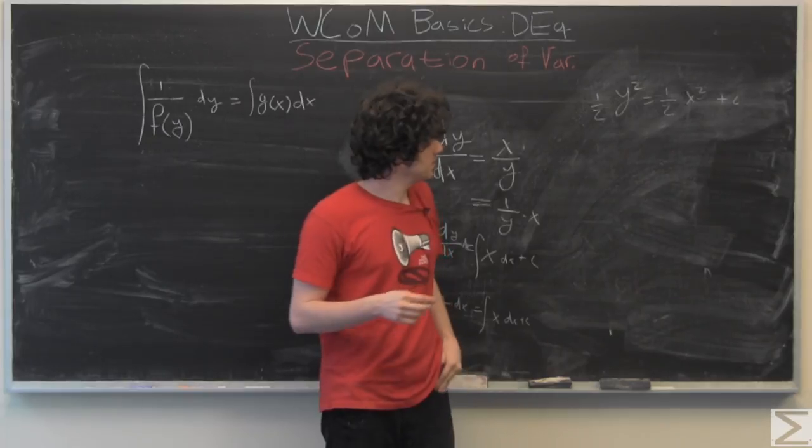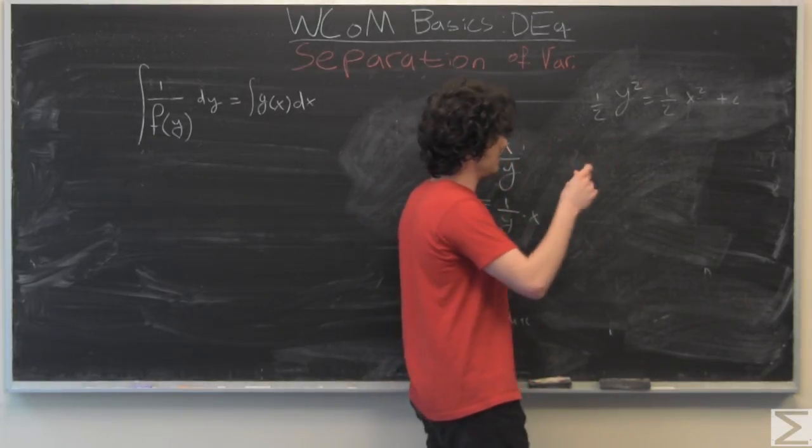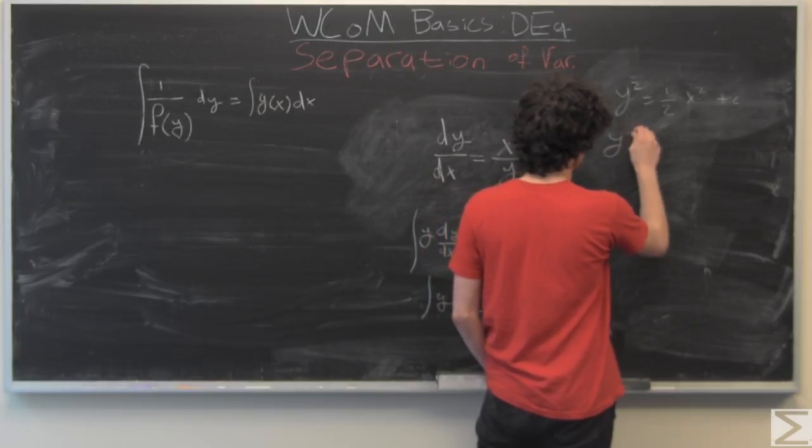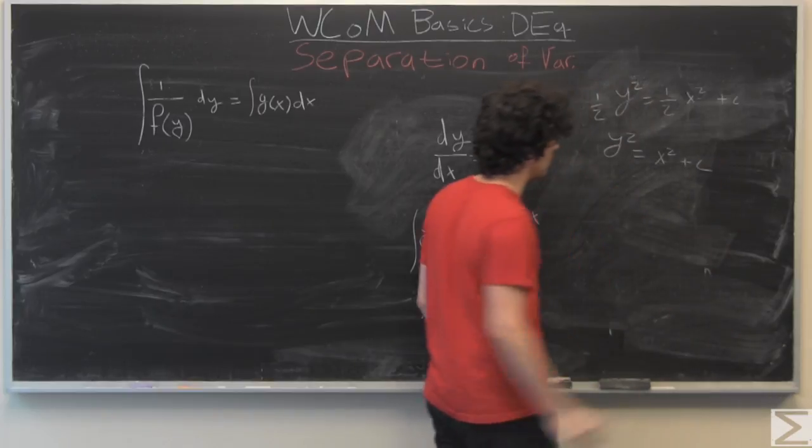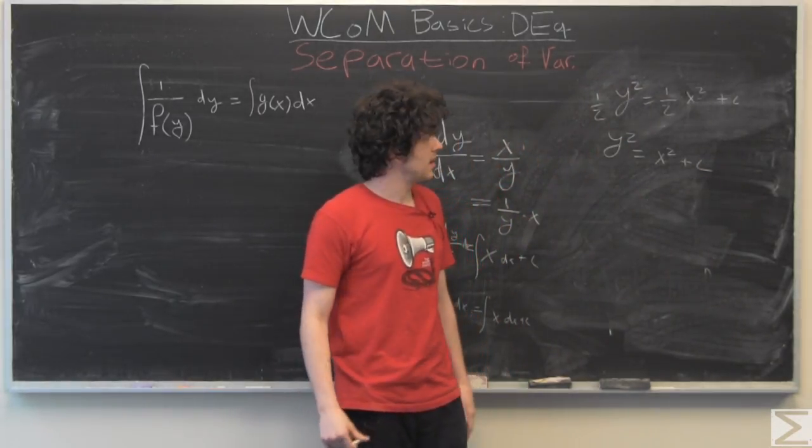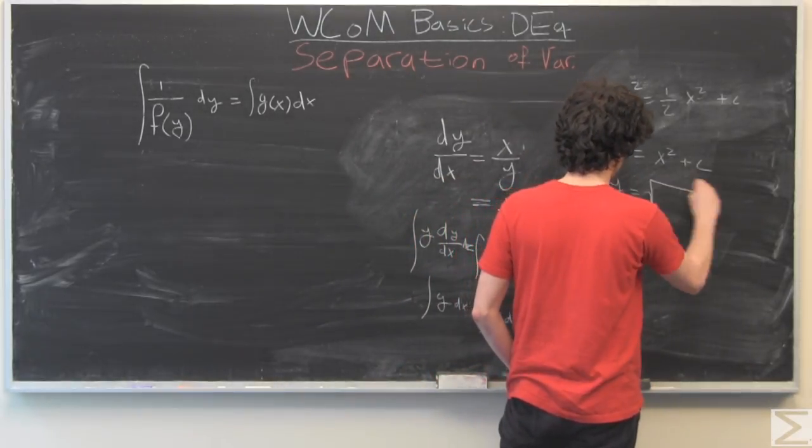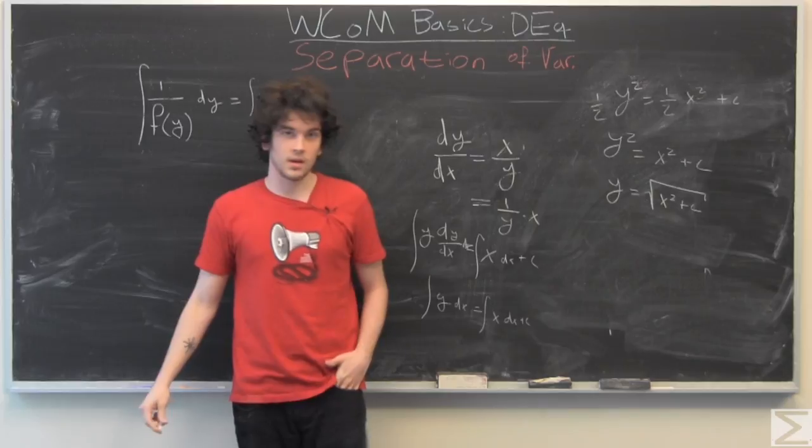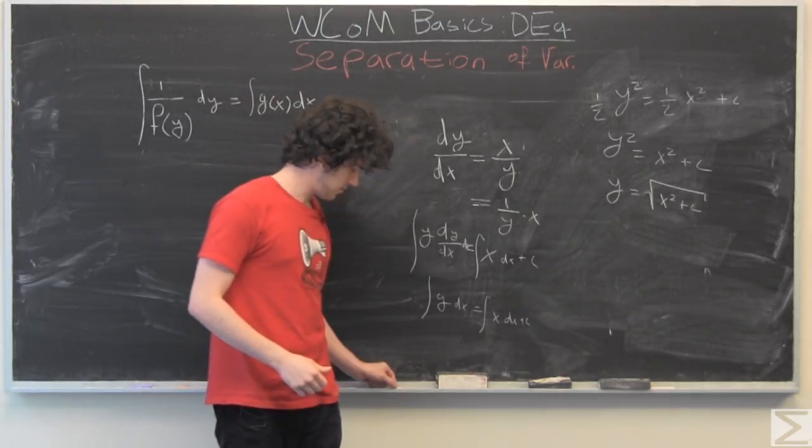So, yeah, the halves are going to multiply everything by 2. The c is also going to absorb the times 2. And there you have it. We've solved our most basic differential equation.